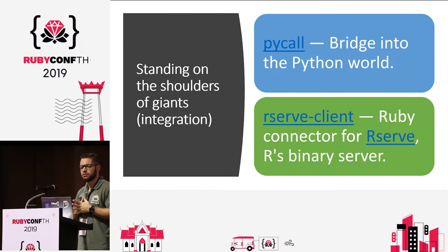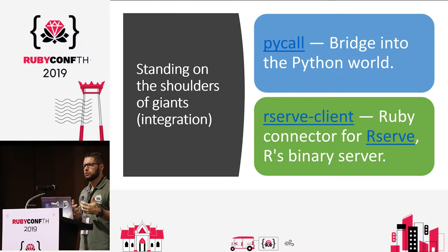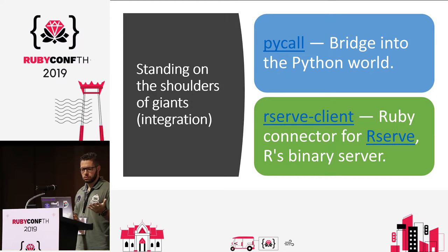We have libraries to integrate Ruby with Python. I found PyCall, created by Kenta Murata. It allows you to write code in Ruby using Python modules as if they were any Ruby library. It's really good and fast, and it solved a lot of problems for me. There are similar libraries for R, but I haven't tested those yet.